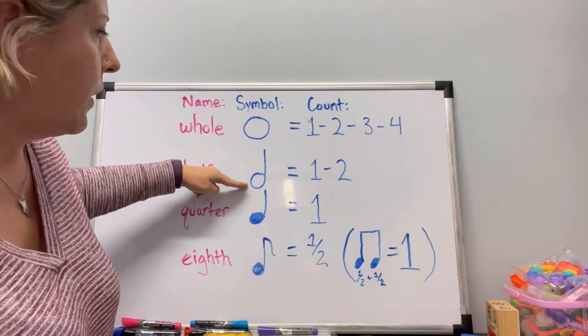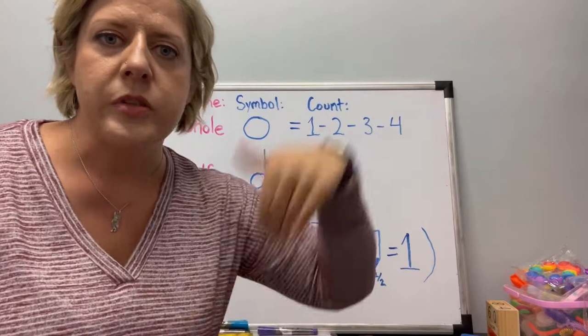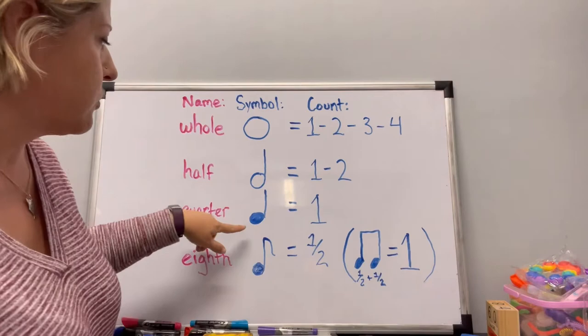The next note looks like a circle with a stem on it. You might see the stem going up or going down — that doesn't change the note at all. Whether the stem is pointing up or down, it's still a half note and it still gets two counts. So whatever instrument you're playing, or if you're singing, you hold it for two counts.